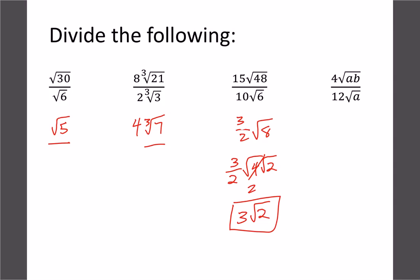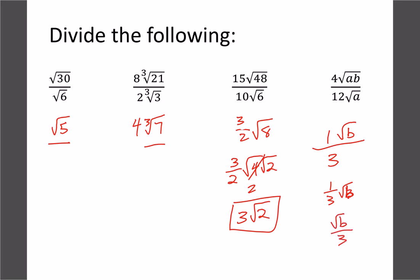For a problem with variables: 4 divided by 12 is 1/3, and root(ab) divided by root a gives root b. You can write the answer as 1/3 root b, or as root b divided by 3 — those are all the same thing, just depending on how you want to write the fraction.